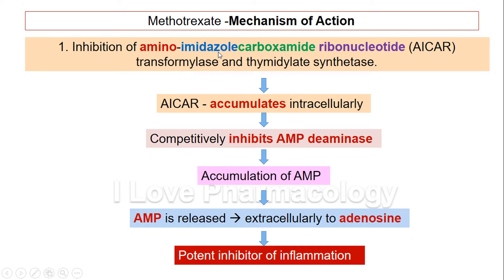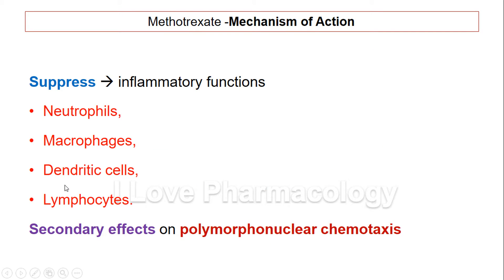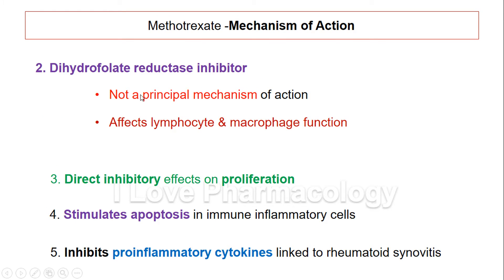In summary, methotrexate causes inhibition of the amino imidazole carboxamide ribonucleotide transformylase, thereby inhibiting the inflammatory reaction. Along with this, it also suppresses the inflammatory functions mediated by neutrophils, macrophages, dendritic cells, and lymphocytes. It also has secondary effects on polymorphonuclear chemotaxis — it inhibits polymorphonuclear chemotaxis.